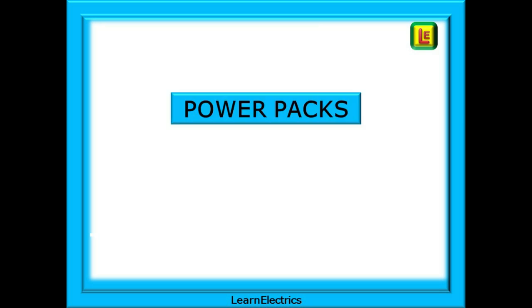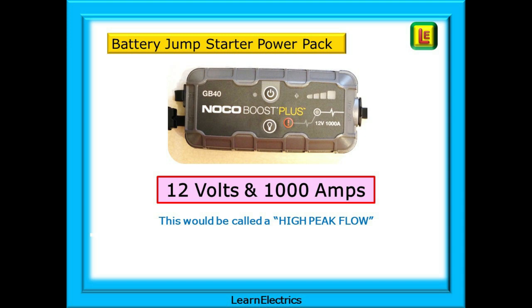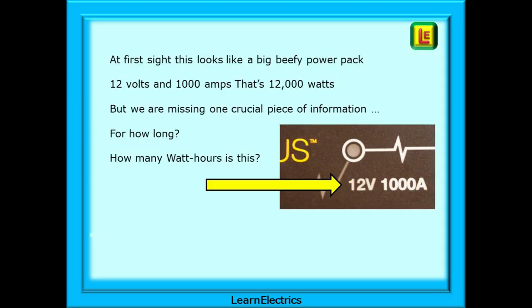Now we can look at power packs, which are becoming more popular with advances in battery technology. This is the battery jump starter from my van — a great little device for just-in-case moments in the middle of winter. It's a 12-volt device with a massive 1,000-amp output, not much bigger than a mobile phone. This device has a high peak flow, expected to deliver hundreds of amps over a very short period to turn the starter motor. At first sight this looks like a big beefy power pack — 12 volts and 1,000 amps — but we are missing one crucial piece of information: for how long will it last, and how many watt hours is it?